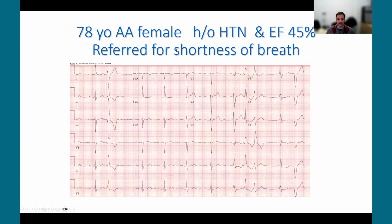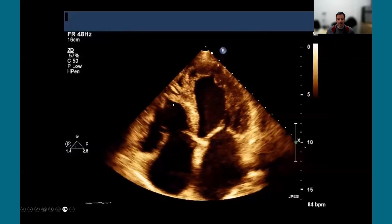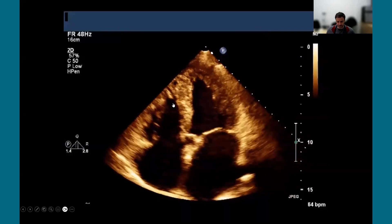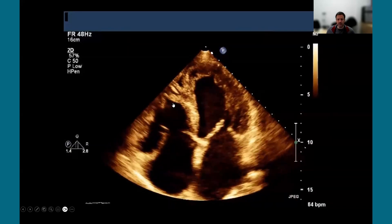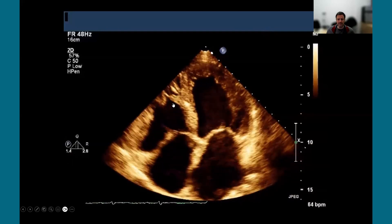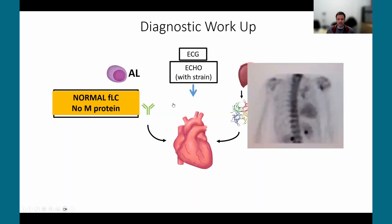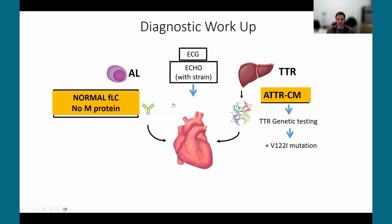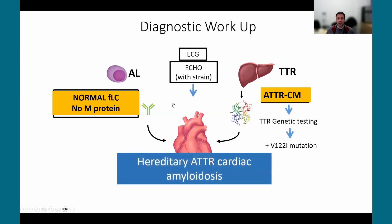Case 2: a 78-year-old African-American female referred for shortness of breath with a history of hypertension and ejection fraction of 45%. Her echo was suspicious, showing biventricular thickening, large atrial dilatation, and thickening of the valves. Workup confirmed ATTR amyloidosis, hereditary, due to the V122I variant. These are two very different conditions — treated very differently, with different prognoses — and in this hereditary case, the children need to be tested.